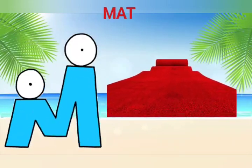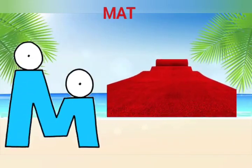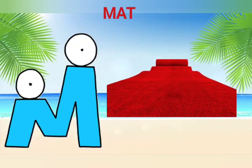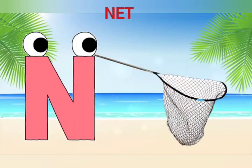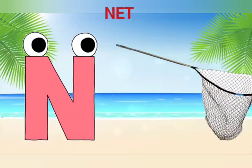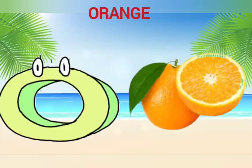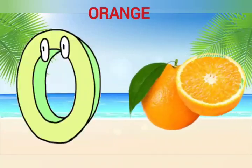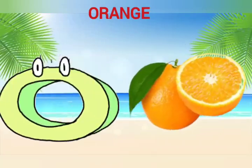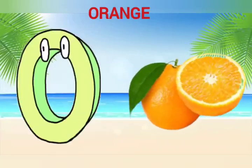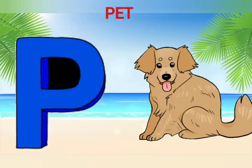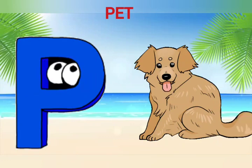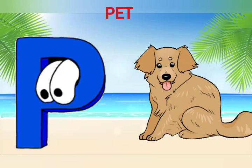M is for Mat, M-M-Mat. N is for Net, N-N-Net. O is for Orange, O-O-Orange. P is for Pet, P-P-Pet.